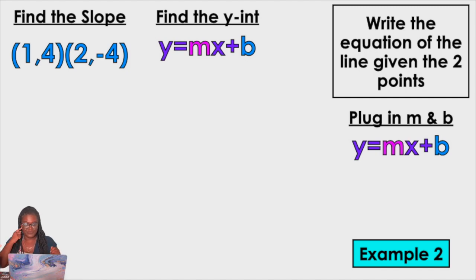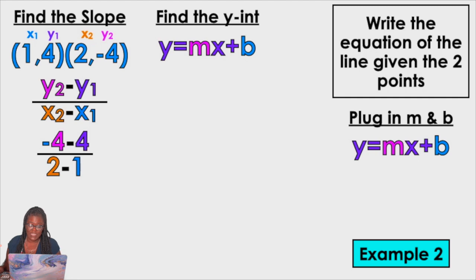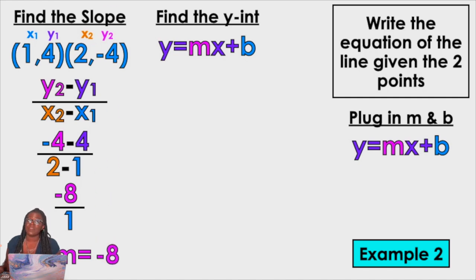Next example — example number 2. Same thing, find the slope. Use the slope formula: Y2 minus Y1 over X2 minus X1. I'm going to label the points and plug in: negative 4 minus 4 over 2 minus 1. I get negative 8 over 1, which is really negative 8. So my slope, which is M, is negative 8.